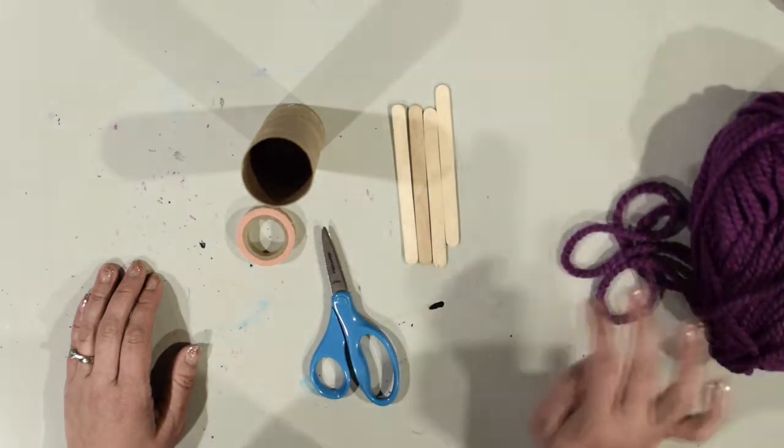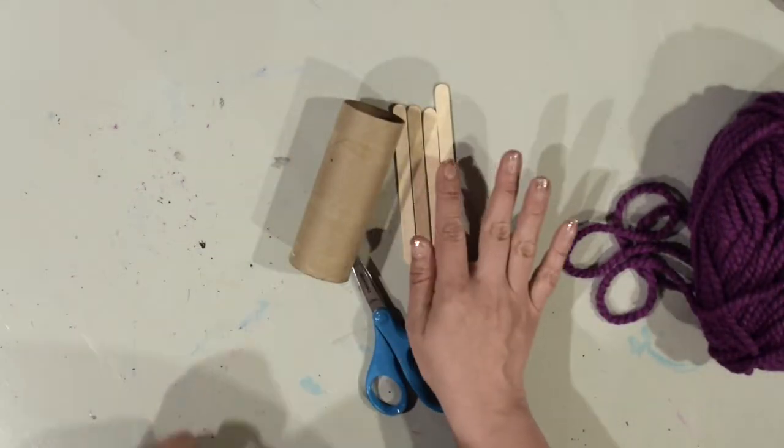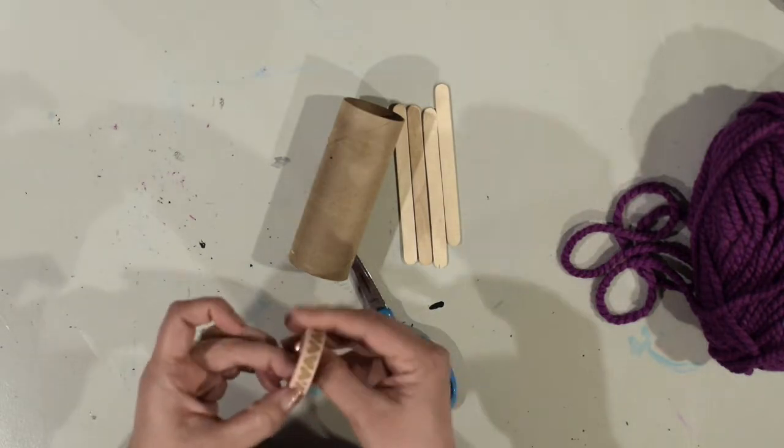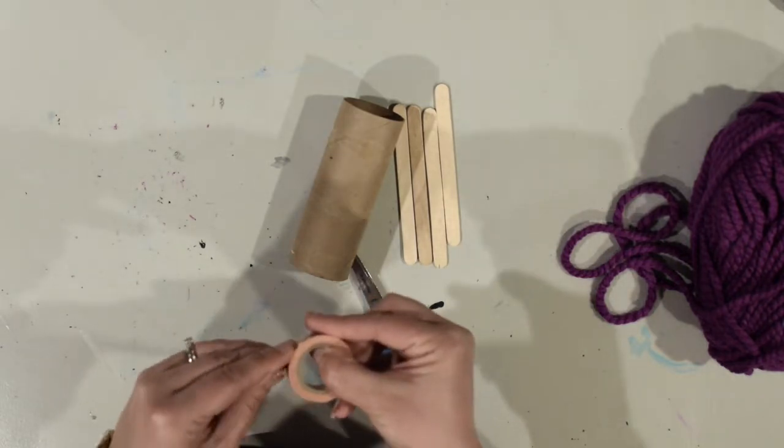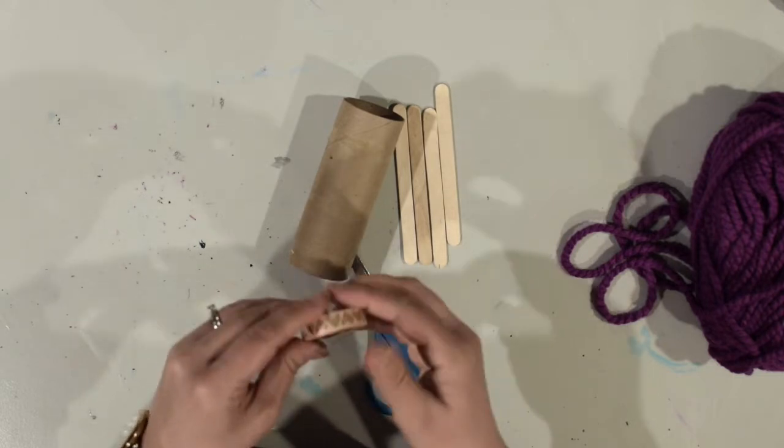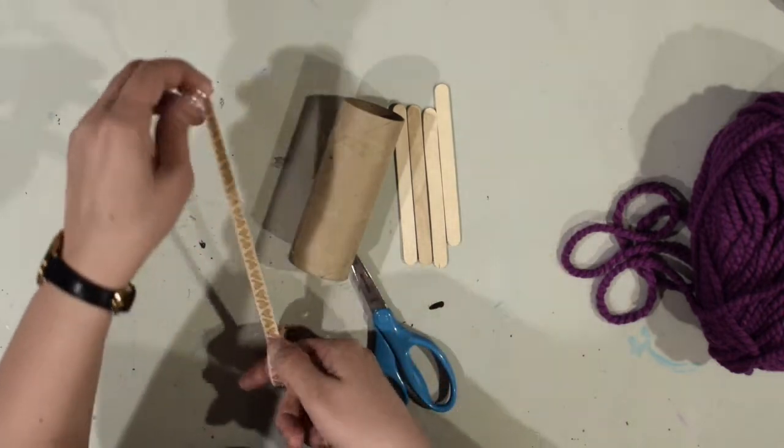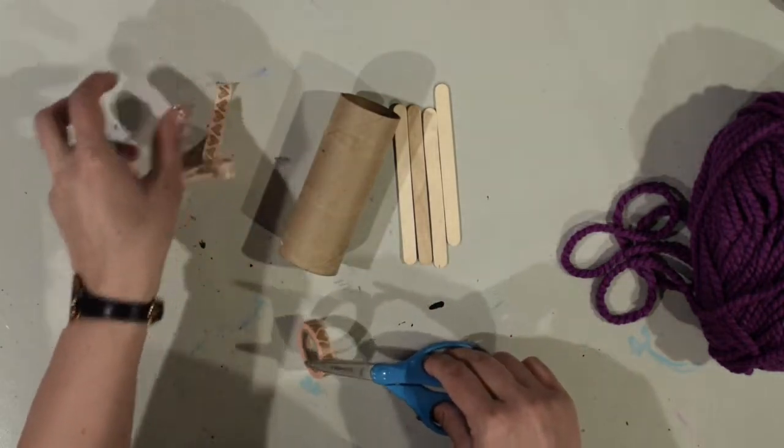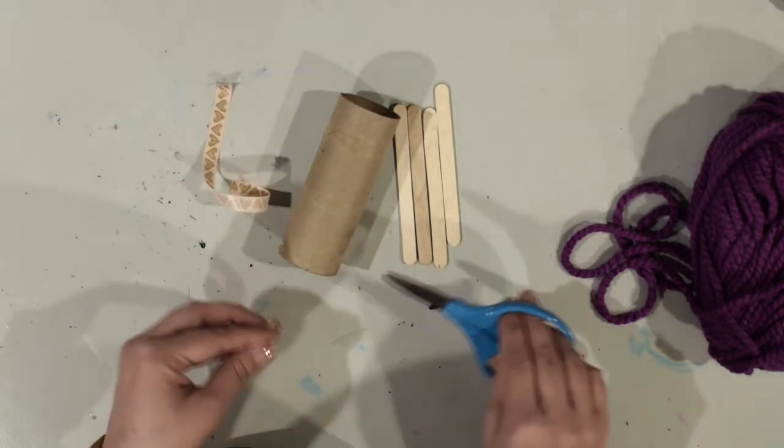So the first step is I'm going to be taping my popsicle sticks onto my cardboard tube. So I'm going to cut myself a couple pieces of tape here, and I'm going to make sure that they're pretty good size - you don't want them just too short. Okay, so notice how long I taped it.